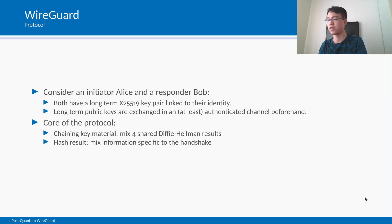The core of the WireGuard protocol involves two rolling values that are computed locally on both sides: a chaining key material and a hash result. The chaining key material is updated by mixing a total of four shared Diffie-Hellman results during the handshake, and is used to generate intermediate encryption keys for authenticated encryption. For example, a timestamp is protected with authenticated encryption using one such intermediate key to prevent replay attacks. The final session keys are also derived from the chaining key material when the handshake finishes.